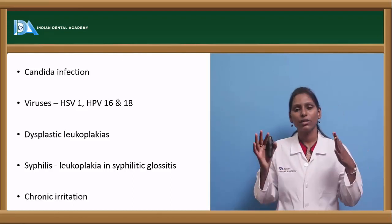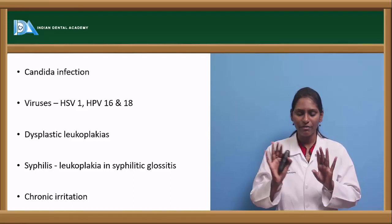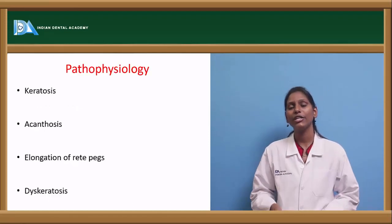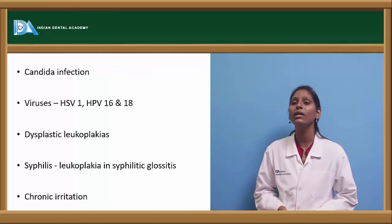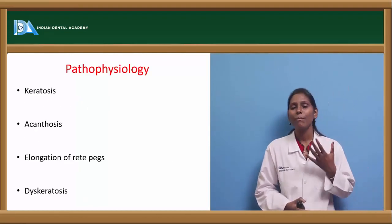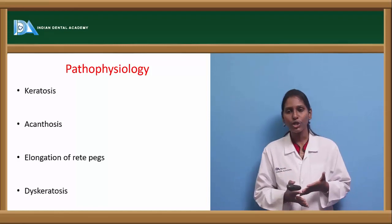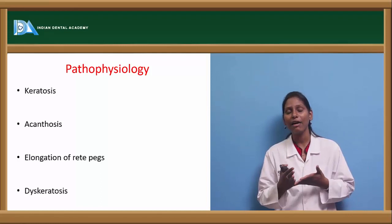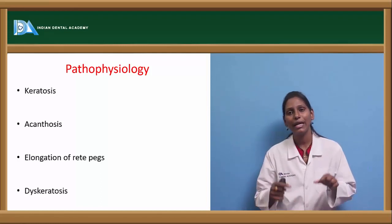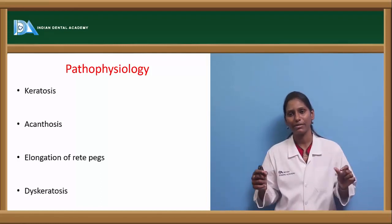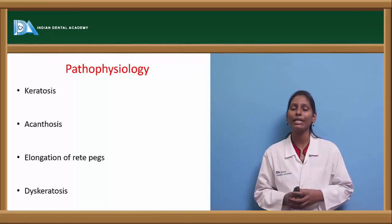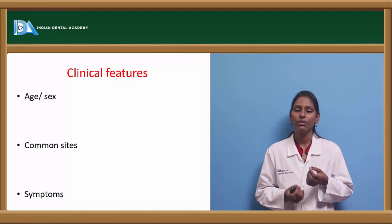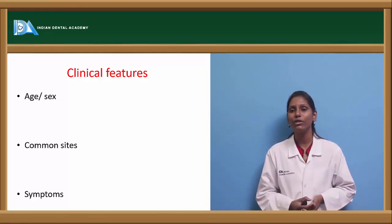Chronic irritation can also lead to leukoplakia. For example, a sharp tooth that has been chronically irritating the mucosa — first we can see frictional keratosis, and later the chronic irritation can lead to a leukoplakia patch. The pathophysiology: initially keratosis occurs, which develops into acanthosis, then we see elongation of the rete pegs, and this elongation further leads into dyskeratosis, giving the actual histopathological picture of leukoplakia.